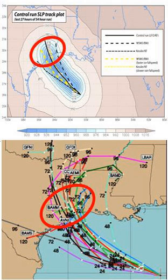It was proposed that seeding with silver iodide outside the eyewall would freeze the supercooled water, release more latent heat, and increase convection. This method was ultimately unsuccessful because of the lack of supercooled water in the tropical cyclone.